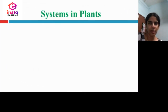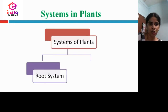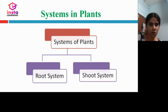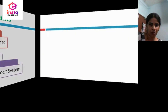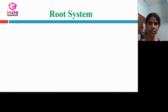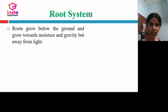Systems in plants: the system of plants is classified into root system and shoot system. Let us discuss about the root system. We know that it grows below the ground, towards the moisture and gravity but away from light.